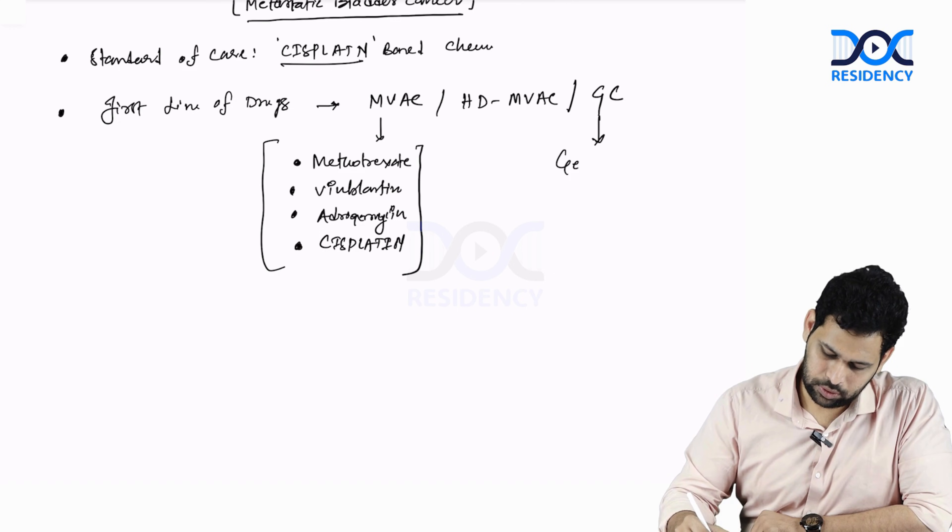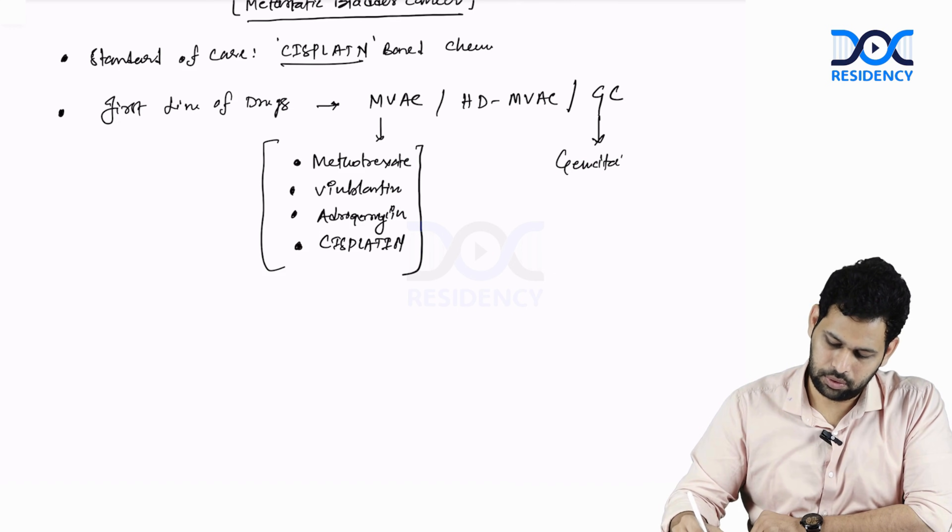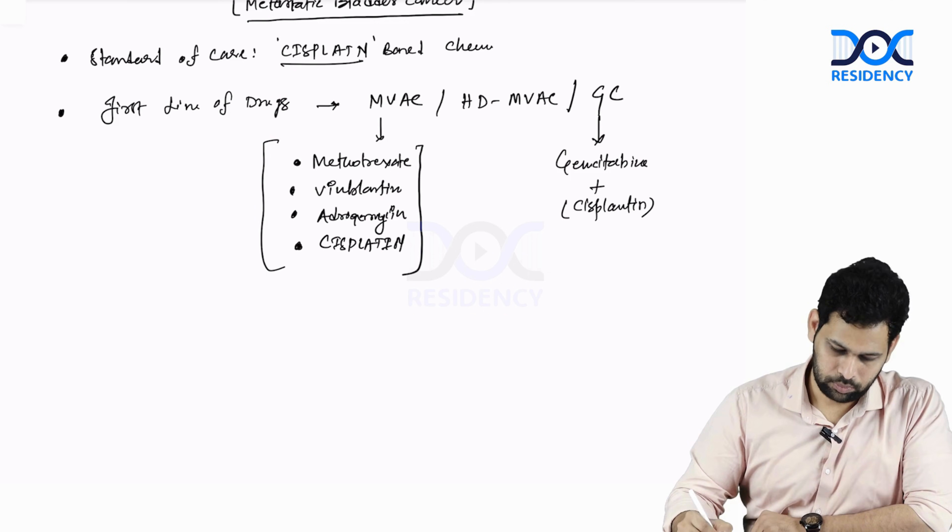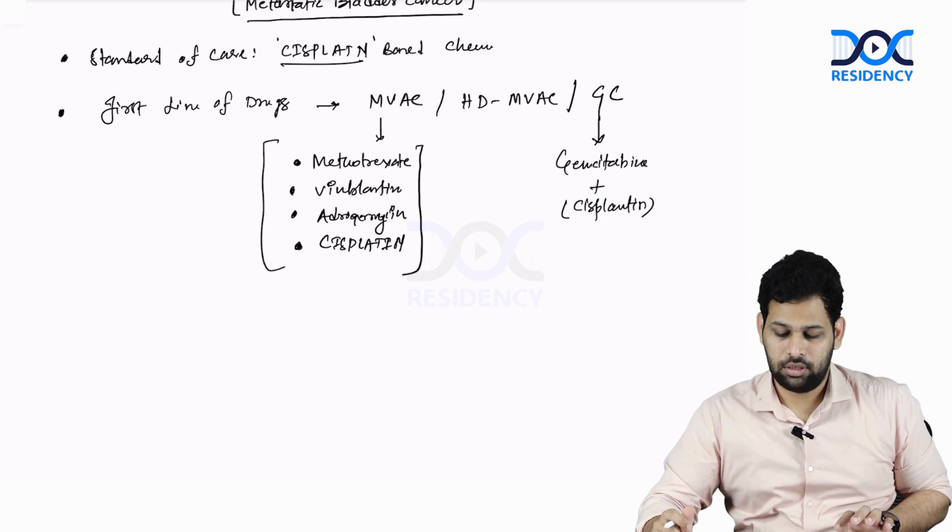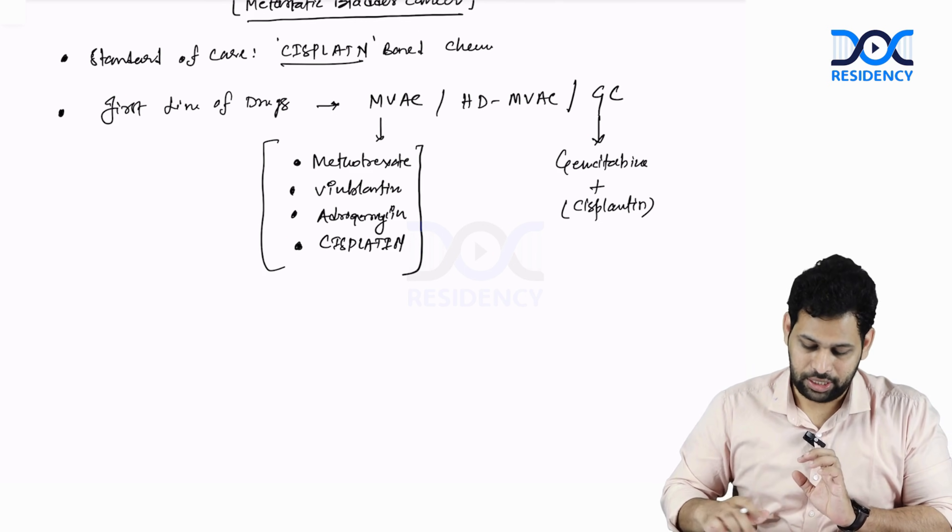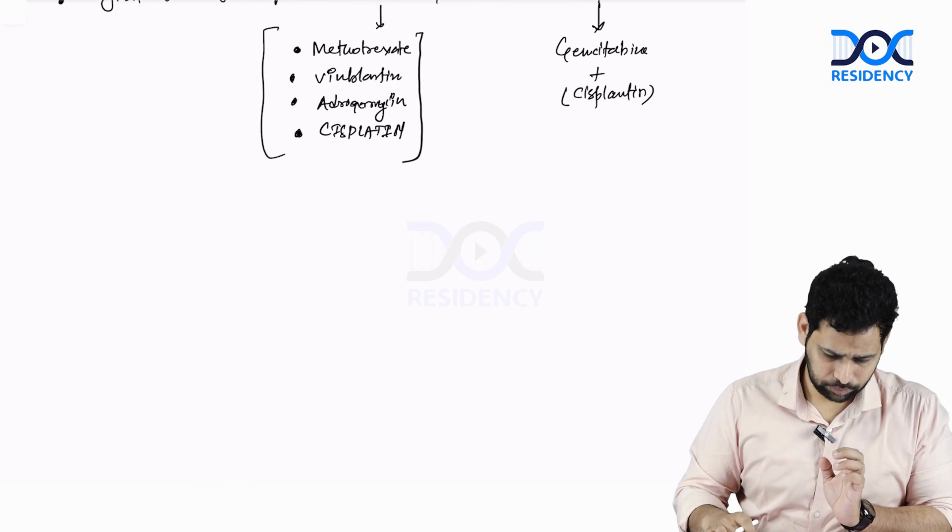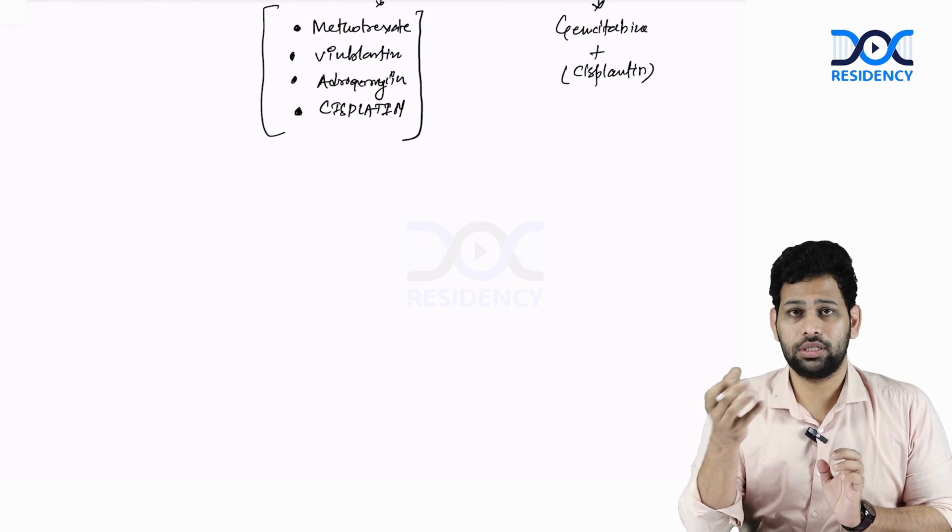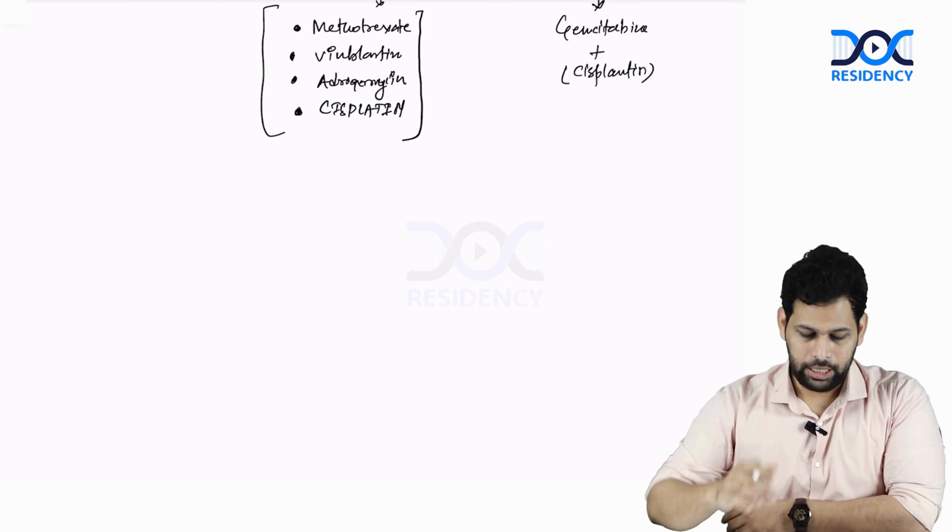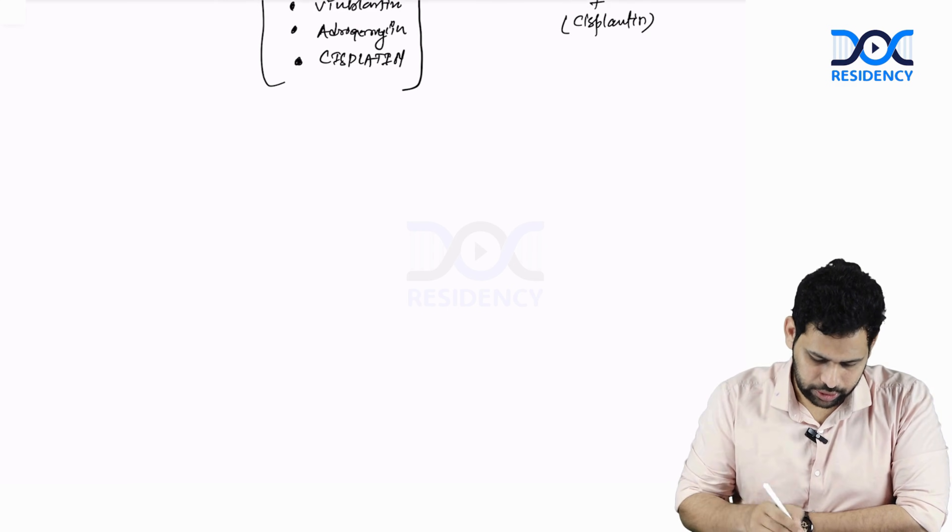GC means gemcitabin and cisplatin. These are the two regimens that are used for the management of metastatic bladder cancer. The overall survival after giving chemotherapy is around 15 to 20 percent.